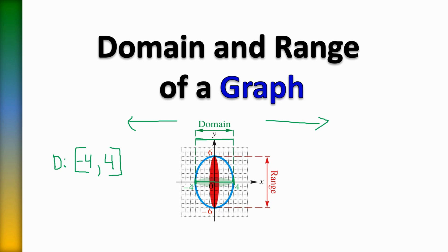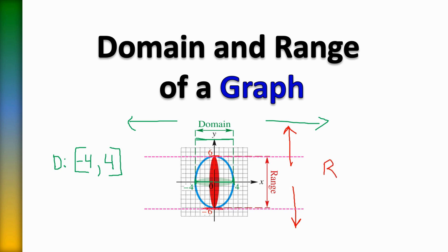When we talk about the range, we want to know what is the lowest point on that graph and what is the extreme highest point. The circle falls as low as negative 6 — it doesn't go any lower — and the highest point is positive 6. So the range, which is how high or low a graph goes, starts at negative 6 — you always write the smaller number first — and goes all the way up to 6. Since it stops at 6, we use a bracket. This is how we write the domain and range in interval notation form.